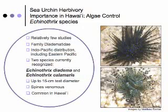However, in addition to Tripneustes, species of the genus Echinothrix are also prevalent in Hawaii. Echinothrix sea urchins are diadematid urchins with an Indo-Pacific distribution. They can get quite large — up to about 15 centimeters in test diameter — and they are common in Hawaii, occurring at high abundances of as high as three urchins per square meter.